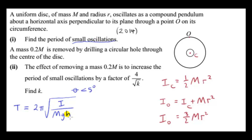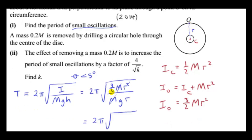So I is the moment of inertia, which we have. M is the mass. H is the distance between the center of mass and the axis of rotation, so H = R. The M's cancel and one of the R's cancels. We get T = 2π√(3R/2g).